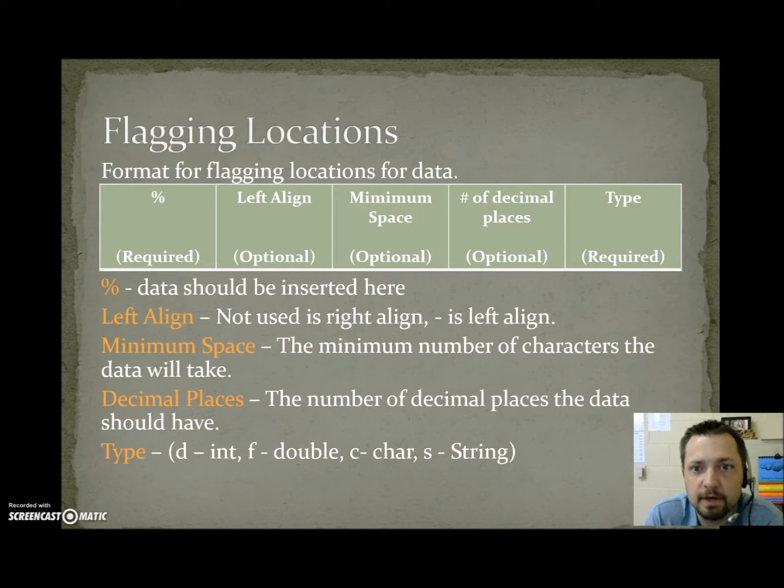Flagging locations for data. When you're flagging a location for data insertion, you're required to put a percent and a type. The percent lets the control string know that you would like to put data here. The type lets the control string know what type of data is being inserted.